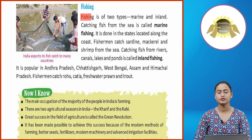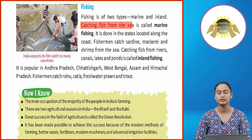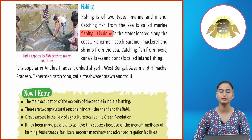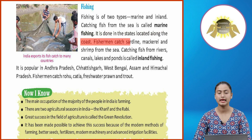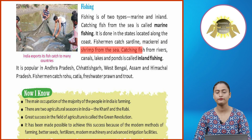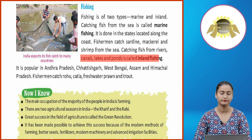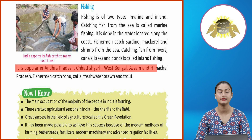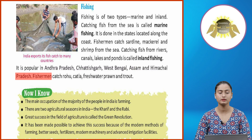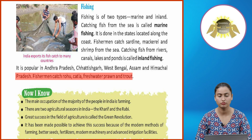Fishing is of two types — marine and inland. Catching fish from the sea is called marine fishing. It is done in states located along the coast. Fishermen catch sardine, mackerel and shrimp from the sea. Catching fish from rivers, canals, lakes and ponds is called inland fishing. It is popular in Andhra Pradesh, Chhattisgarh, West Bengal, Assam and Himachal Pradesh. Fishermen catch rohu, katla, freshwater prawn and trout.